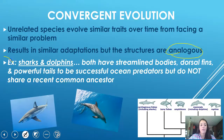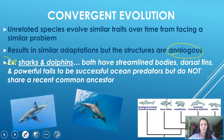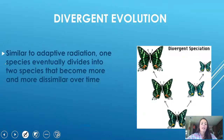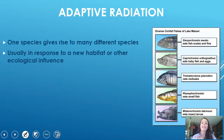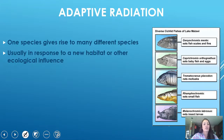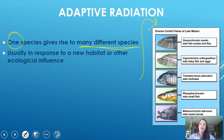Convergent evolution is where unrelated species evolve similar traits over time — these are usually analogous structures with different structure but same function. A good example is sharks and dolphins: both have streamlined bodies, dorsal fins, and tails and are successful ocean predators, but they don't share a recent common ancestor — sharks are fish and dolphins are mammals. Divergent evolution is the opposite, where one species splits through variation over time into two different organisms.